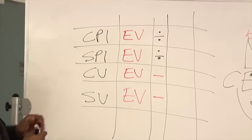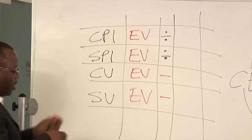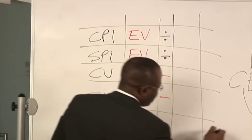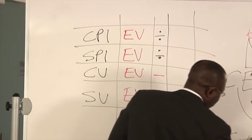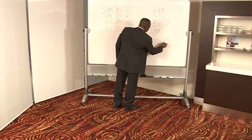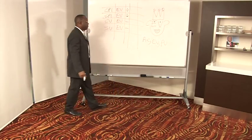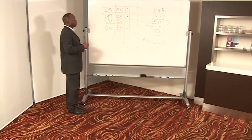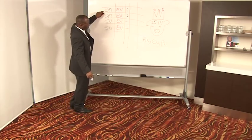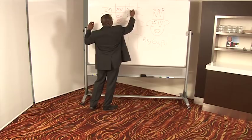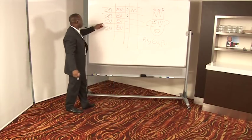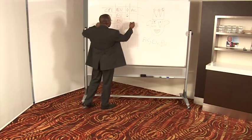If you're talking about cost, remember we've got these three basic metrics: AC, EV and PV. Basic metrics in EV. If you're talking about cost, we're going to take the actual cost and put that in here. Talking about cost, actual cost.